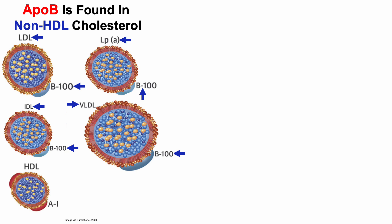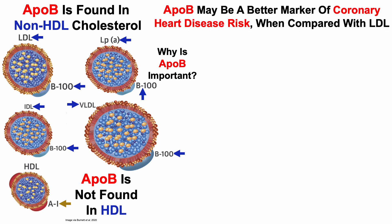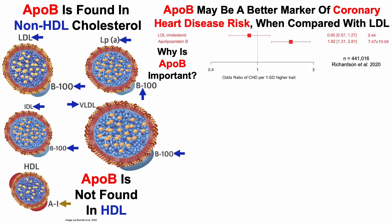Note that APO-B is not found in HDL, which instead has APO-A1. So why is APO-B important? APO-B may be a better marker of coronary heart disease risk when compared with LDL, and that's what we'll see here. On the x-axis, we've got the odds ratio of CHD, and this is a study of about 441,000 people.